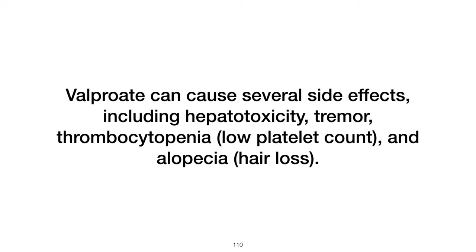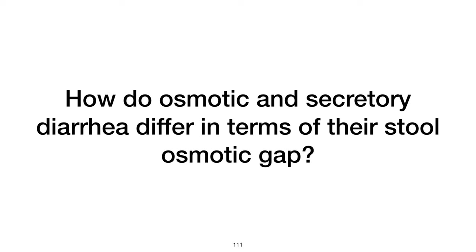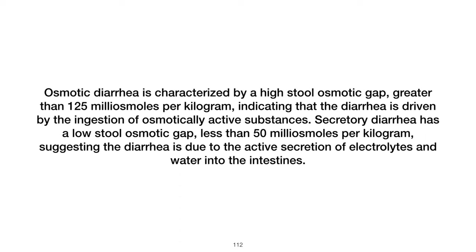How do osmotic and secretory diarrhea differ in terms of their stool osmotic gap? Osmotic diarrhea is characterized by a high stool osmotic gap (greater than 125 mOsm/kg), indicating diarrhea driven by ingestion of osmotically active substances. Secretory diarrhea has a low stool osmotic gap (less than 50 mOsm/kg), suggesting diarrhea due to active secretion of electrolytes and water into the intestines.